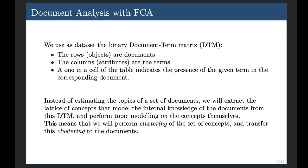In the columns of the dataset, we have the terms, the words, these are called the attributes. And, in each cell of the table, we have a 0 or a 1, that is, we have a binary document-term matrix, and a 1 in one of these cells indicates that the given term is present in the corresponding document.